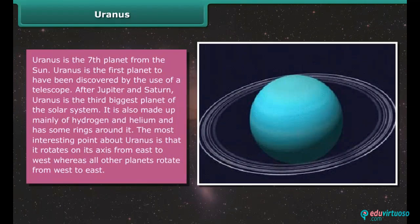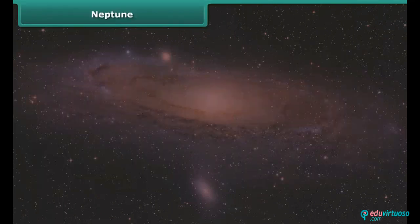Uranus is the seventh planet from the sun. Uranus is the first planet to have been discovered by the use of a telescope. After Jupiter and Saturn, Uranus is the third biggest planet of the solar system. It is also made up mainly of hydrogen and helium and has some rings around it. The most interesting point about Uranus is that it rotates on its axis from east to west, whereas all other planets rotate from west to east.